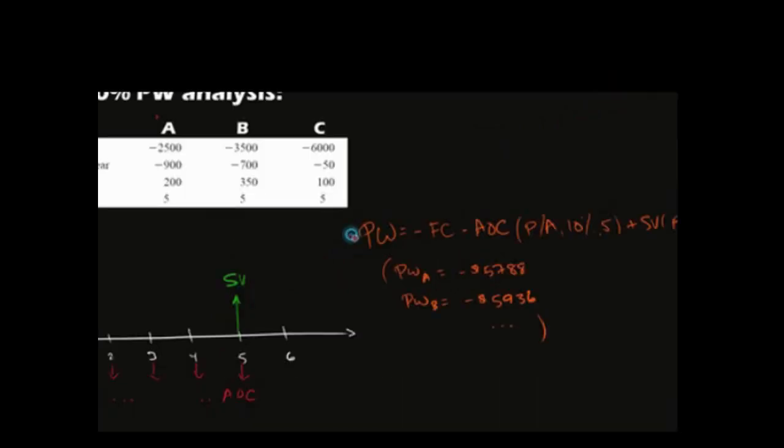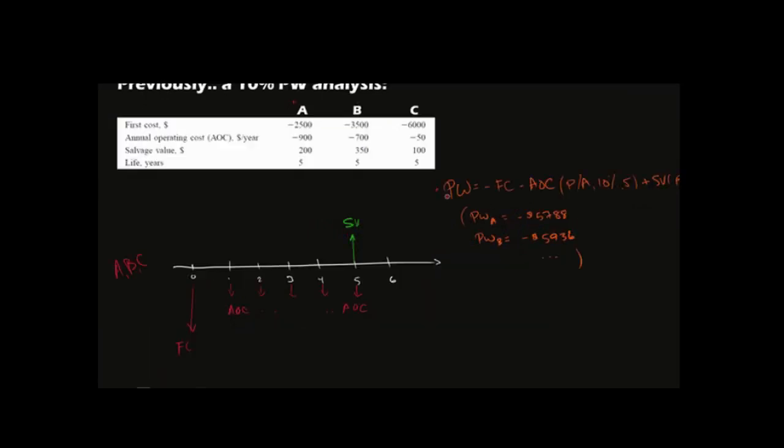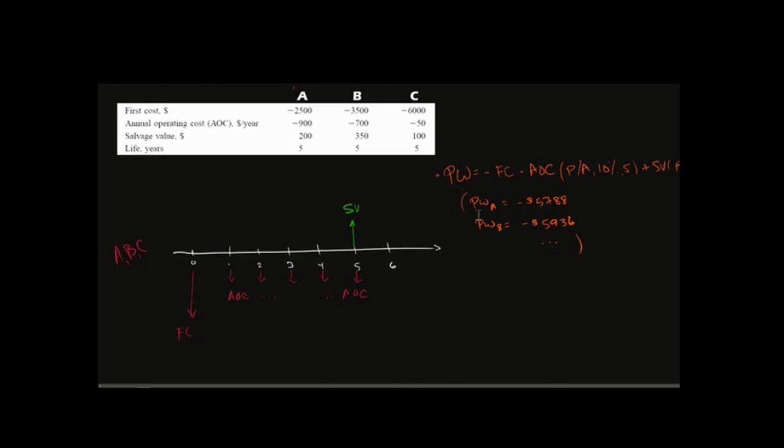So calculating the present worth for each of those was pretty straightforward. You see the setup here, you just had to plug in the values for each option and then pick the one that costs you the least or makes you the most money. But in this case, it was costing you the least.